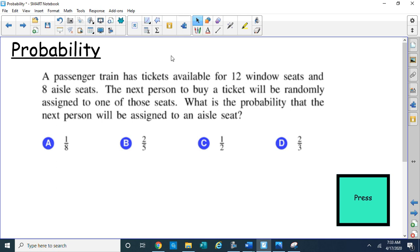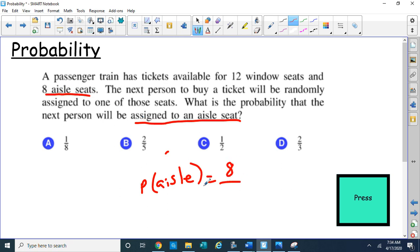Well, my first question would be, how many aisle seats are there? Because they want to know, what's the probability that the next person, randomly, is going to be assigned to an aisle seat? So the probability of an aisle seat, how many aisle seats are there? They said there were 8. So that's what I need, an aisle seat. Now, that's got to be out of how many total seats are there? Well, I see there are 12 window seats. So you can sit by the window. So I got 12 window seats and I have 8 aisle seats. So there are a total of 20 seats altogether.